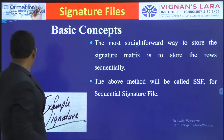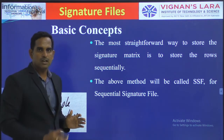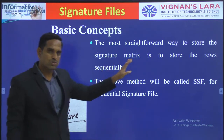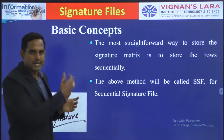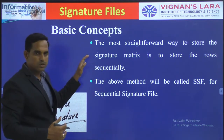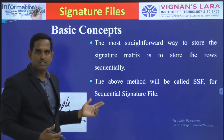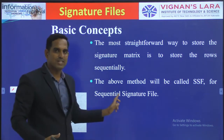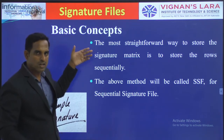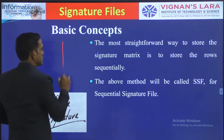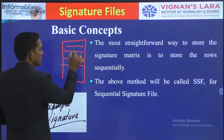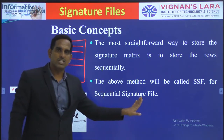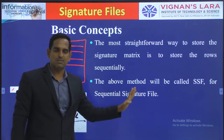The most straightforward way to store signatures is to store the signature matrix rows sequentially — taking block signatures one by one and storing them sequentially. This method is called SSF or Sequential Signature File, because block signatures are placed one by one in sequential row order.